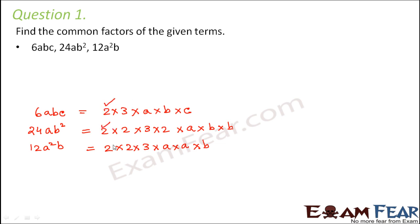2. So 2 is a common factor. It is present in all of them. What about 3? 3 is again a common factor which is present in all of them. A. A again is a common factor. In all of them, b. b also is a common factor.